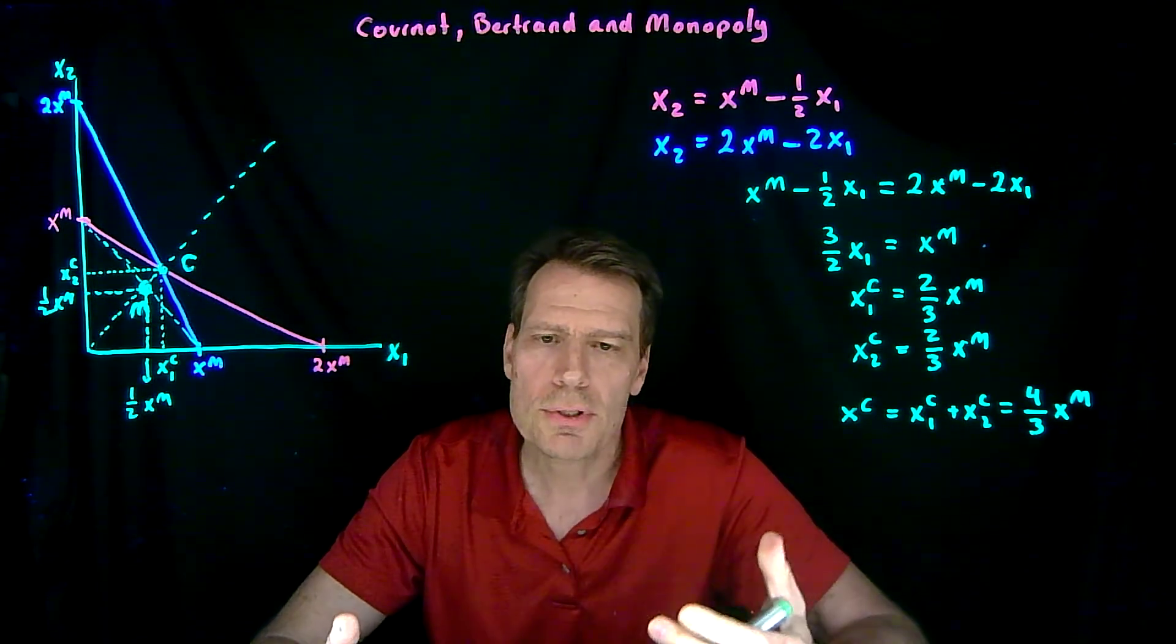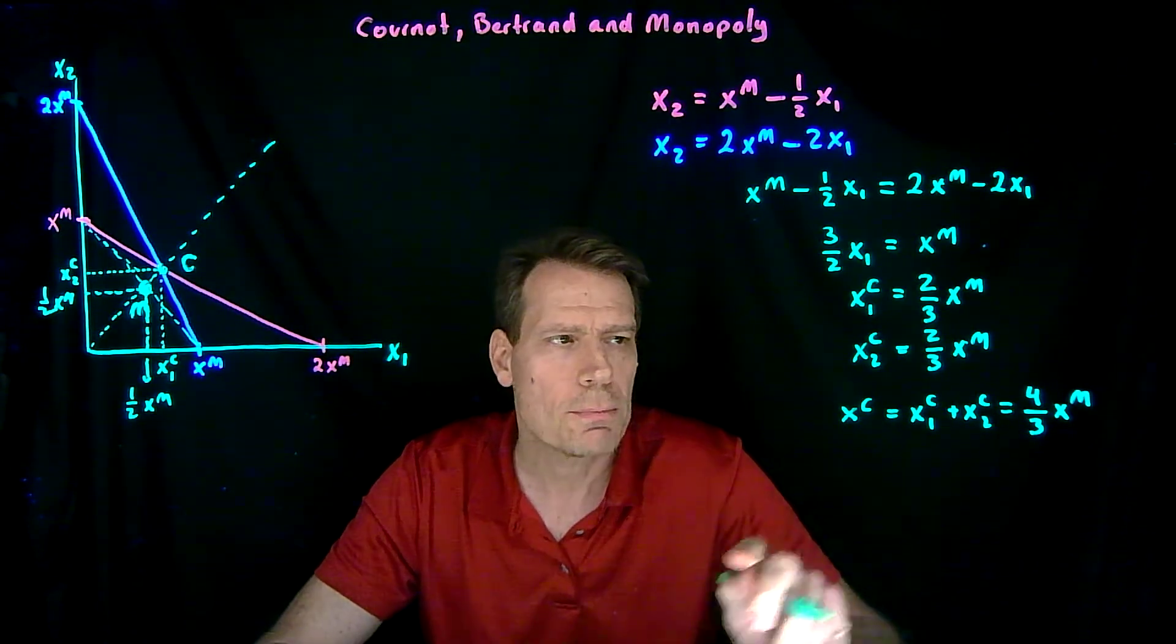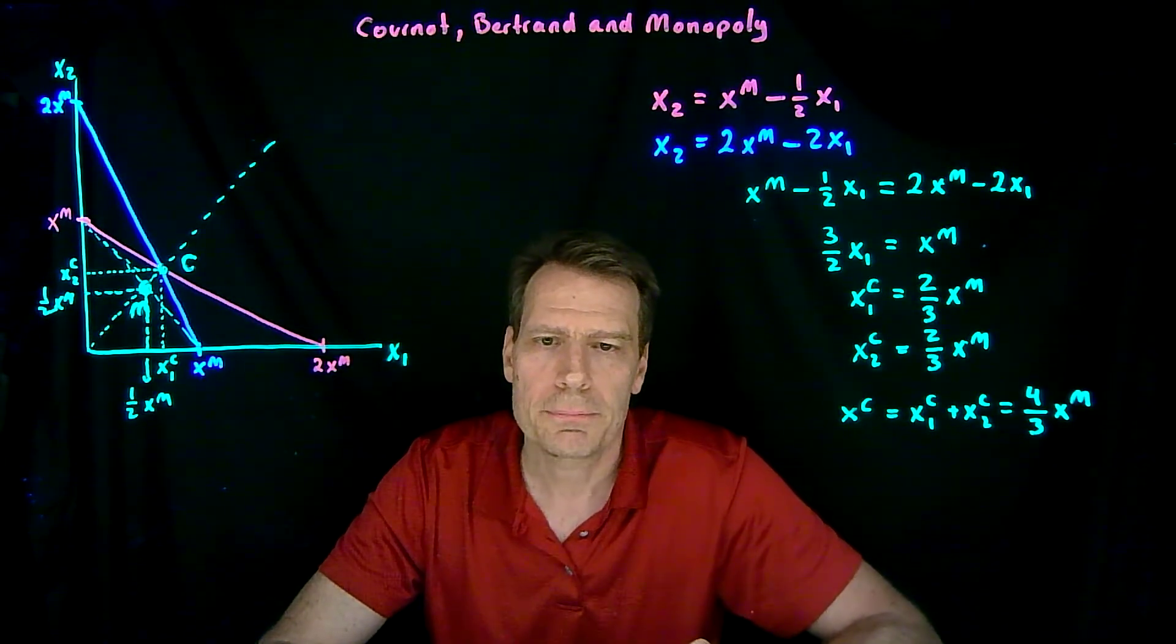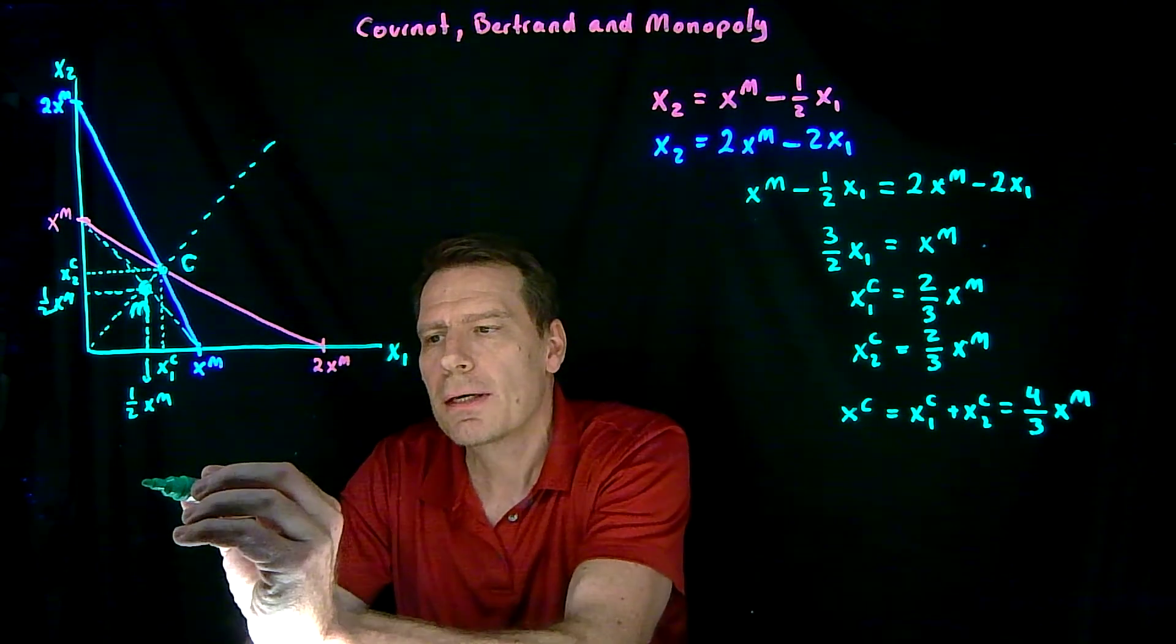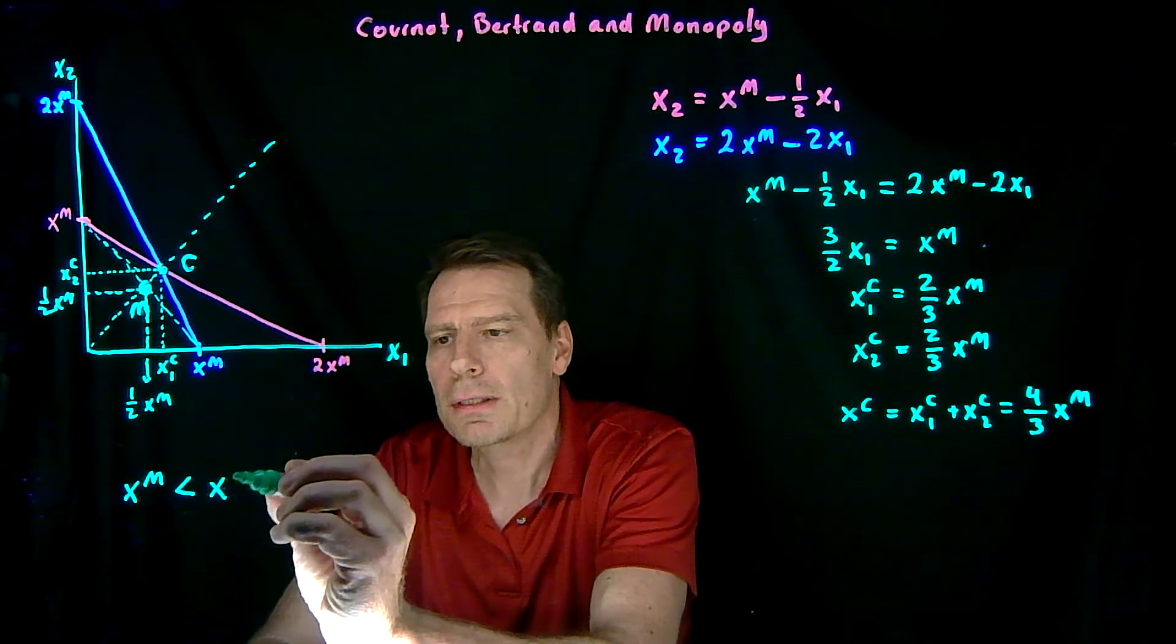In fact, for the assumptions that we've made, a linear demand curve and constant marginal cost for both firms, the Cournot quantity is 4 thirds the monopoly quantity. So we know that the monopoly quantity is less than the Cournot quantity.